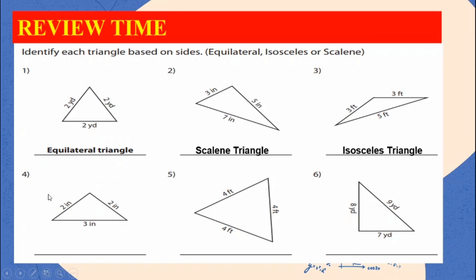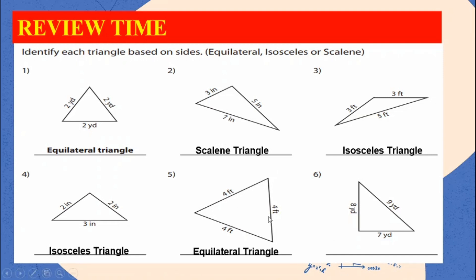It's the same thing with number four. Number four is an example of an isosceles triangle, because two sides are congruent. For number five, it is an example of equilateral because all sides are congruent. And for our last number, it is an example of scalene, because all sides have different measurement or length, or there are no congruent sides.